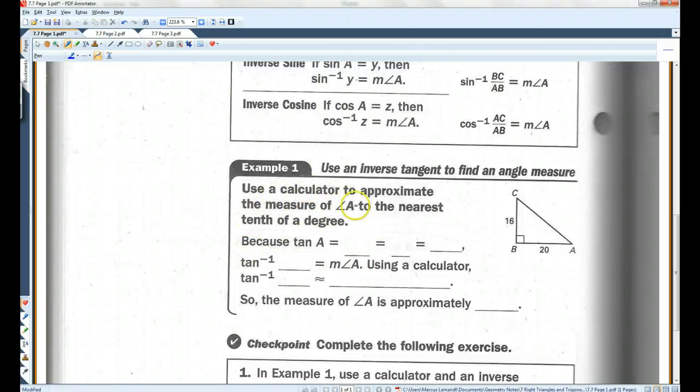Use a calculator to approximate the measure of angle A to the nearest tenth of a degree. So this is what we're looking for. We are looking for angle A. We are given the opposite side and the adjacent side. So if you think of SOHCAHTOA, we have opposite and adjacent, so we're going to be using tangent.